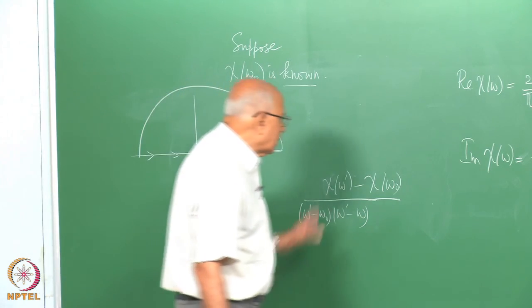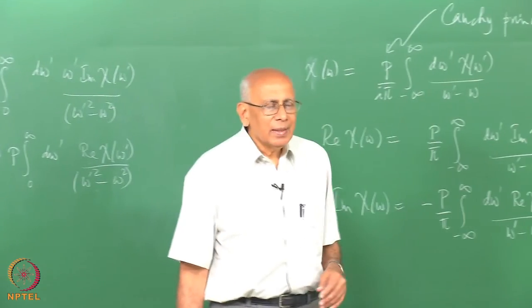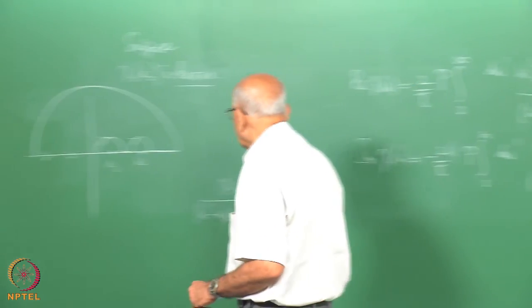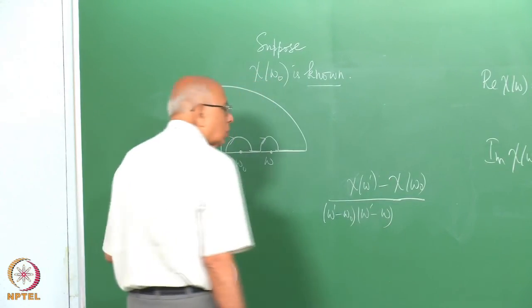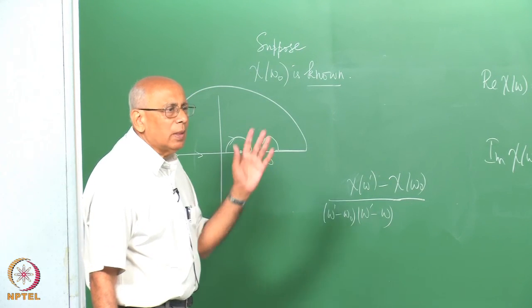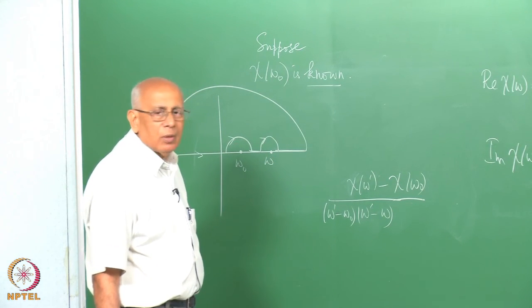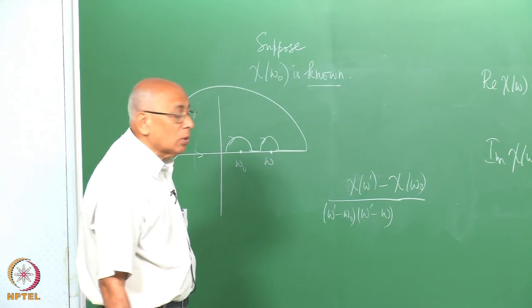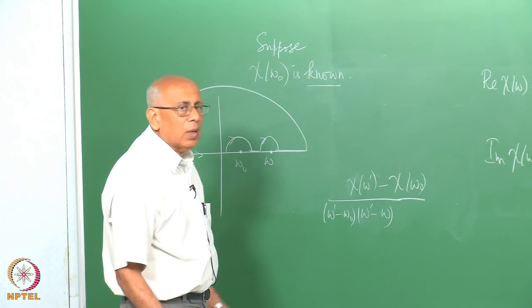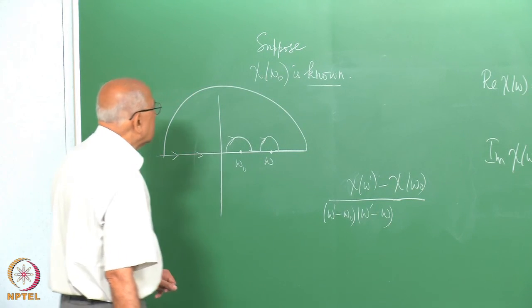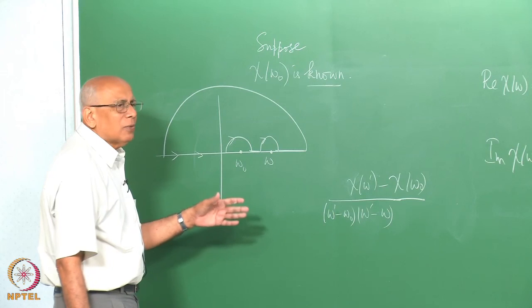As long as chi does not have an essential singularity at infinity — as long as it blows up at most like some polynomial power of omega prime — you are fine. If it blows up exponentially you cannot write a dispersion relation. These are just techniques for getting rid of convergence difficulties, but the basic idea remains the same.